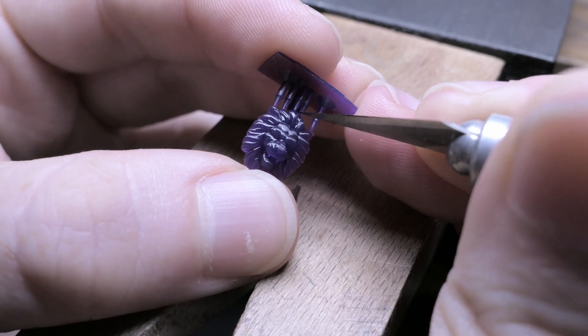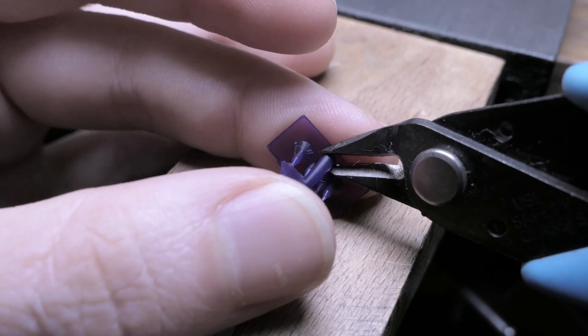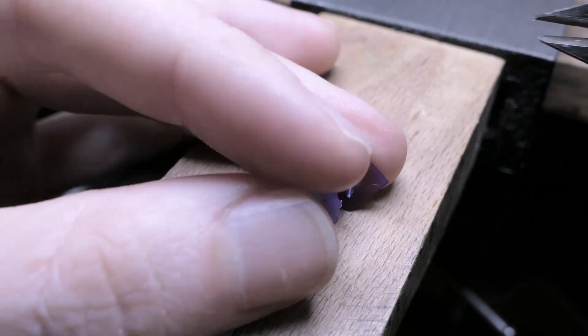I'm just going to use an X-Acto knife to remove some of these supports, and then break off that thicker sprue using some snips.